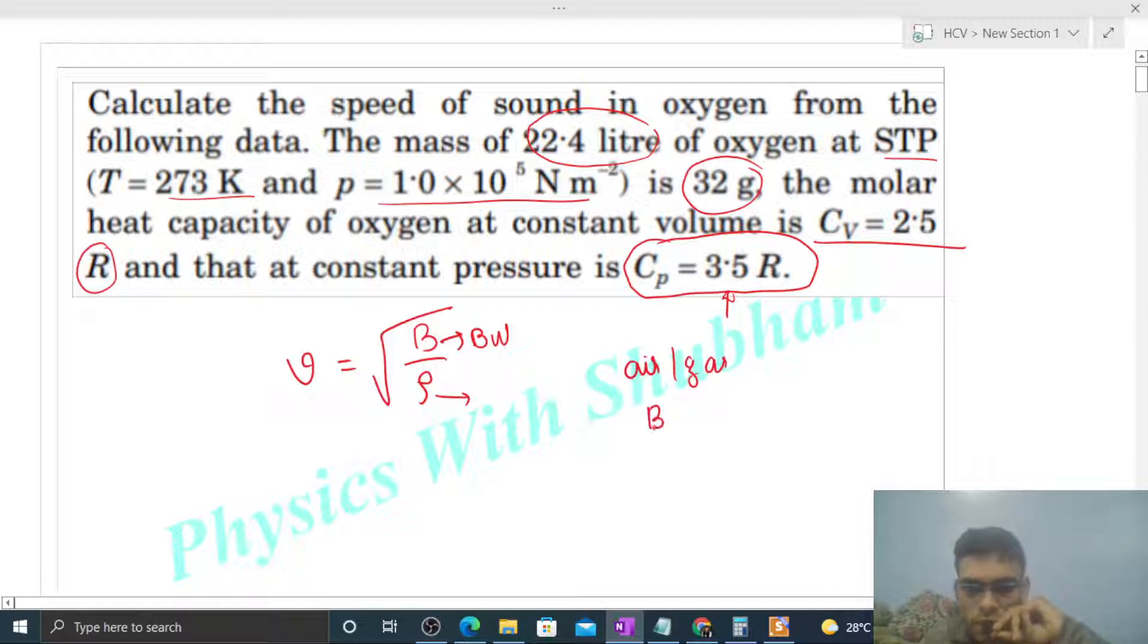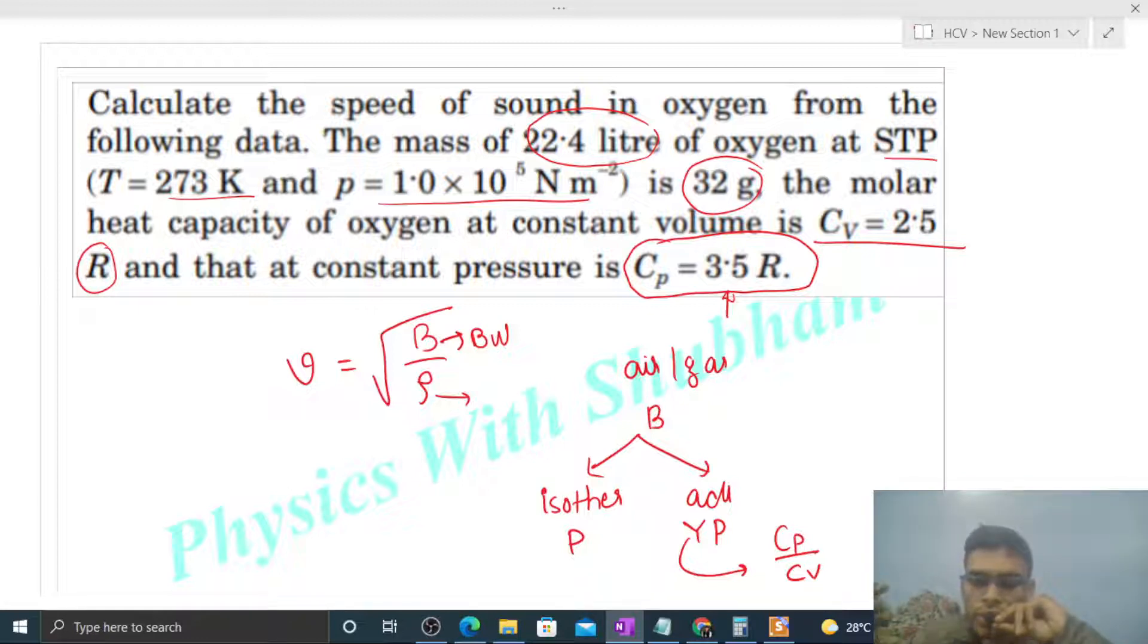Now for air or you can say for gases, jo bulk modulus of process pay depend karta hai. If the process is isothermal then bulk modulus will be simply pressure, and if the process is adiabatic then bulk modulus will be gamma into P. What is this gamma? Gamma is the ratio, that is Cp by Cv. And the traveling of sound in gases, that is adiabatic process.